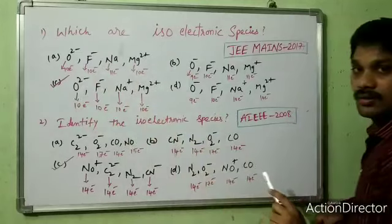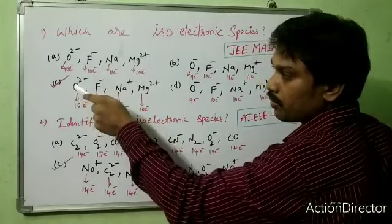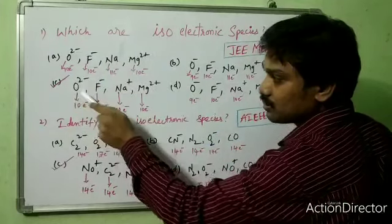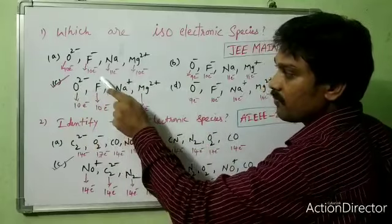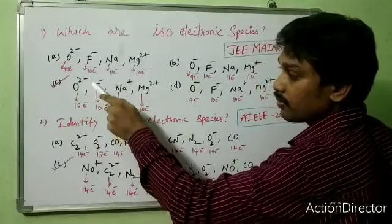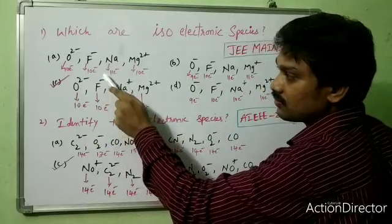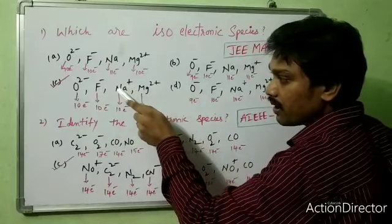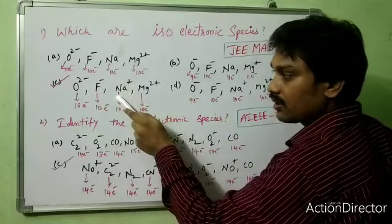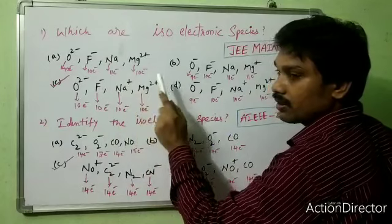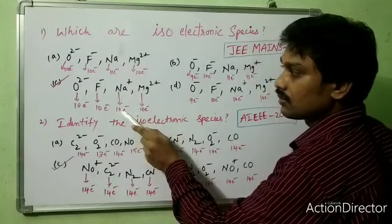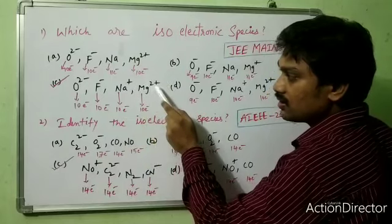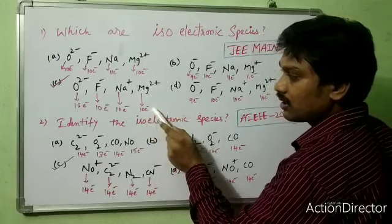Option C: O²⁻ — oxygen has 8 protons, gaining 2 electrons, so 8 plus 2 equals 10 electrons. F⁻ — 9 protons plus 1 gained electron equals 10 electrons. Na⁺ — 11 protons minus 1 lost electron equals 10 electrons. Mg²⁺ — 12 protons minus 2 lost electrons equals 10 electrons.